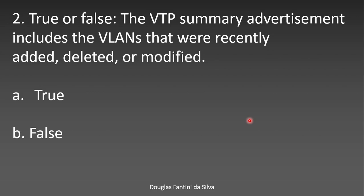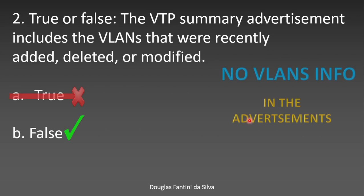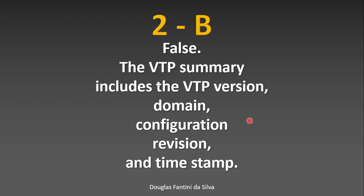Question number two is a true or false question. The VTP summary advertisement includes the VLANs that were recently added, deleted, or modified. Be careful — this is FALSE. A summary advertisement will not include VLAN information. It includes VTP version, VTP domain configuration, revision, and timestamp, but no VLAN information.